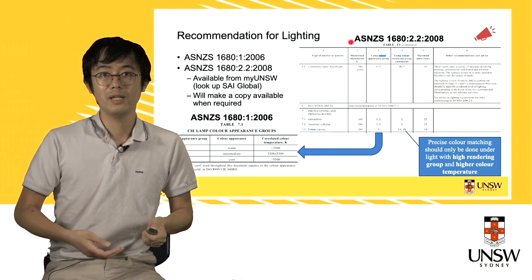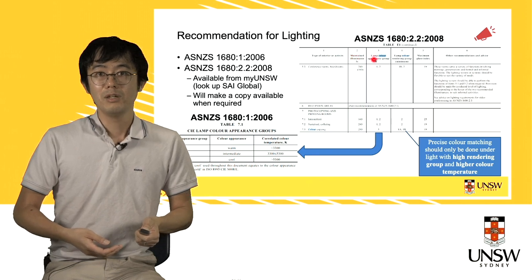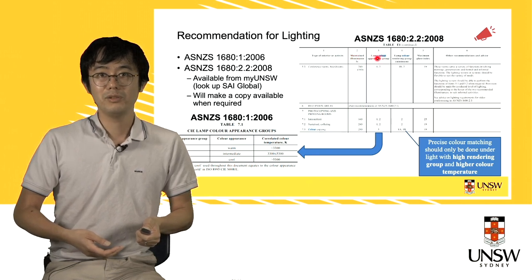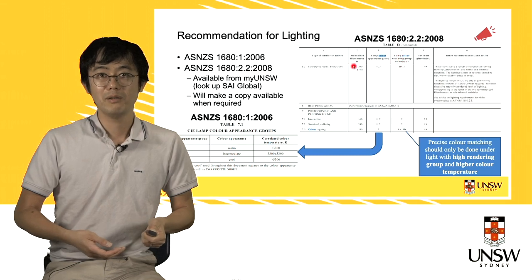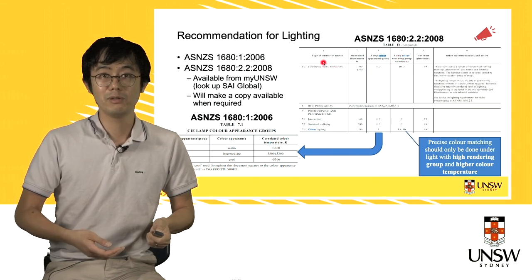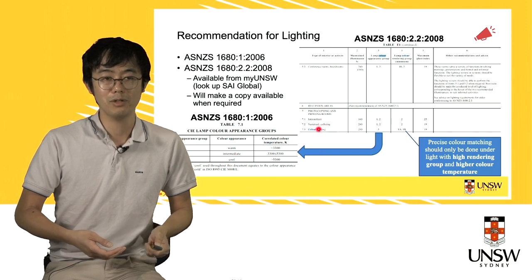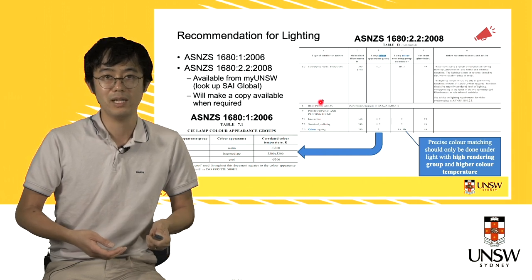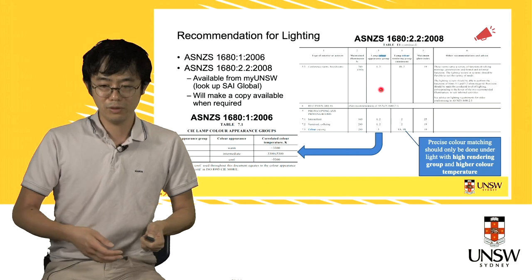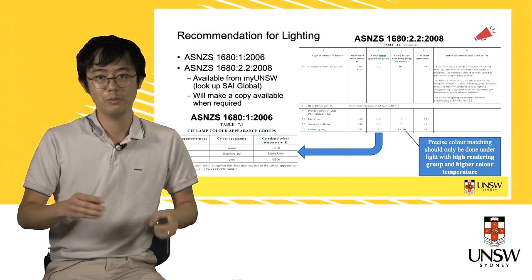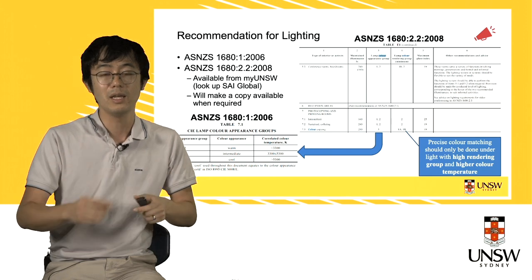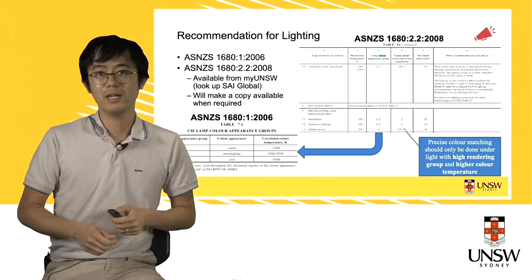The ASNZS 1680 standard covers useful things like the amount of illuminance you need, the color temperature you should be using, and the color rendering index. It gives guidance for different types of tasks as well, because some tasks require more or less lighting than others. And of course, if it involves colors, there are additional considerations in terms of color rendering index and correlated color temperature.